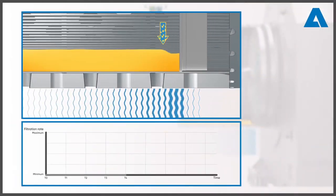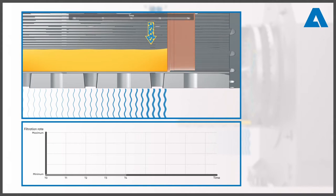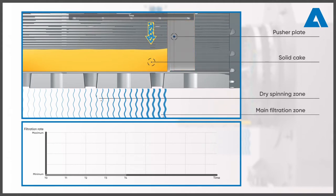Let's take a closer look. The pusher plate is in position at the far left. Thus the suspension only encounters existing filter cake. This cake has been pushed together to form a solid mass so very little filtrate can pass through it.